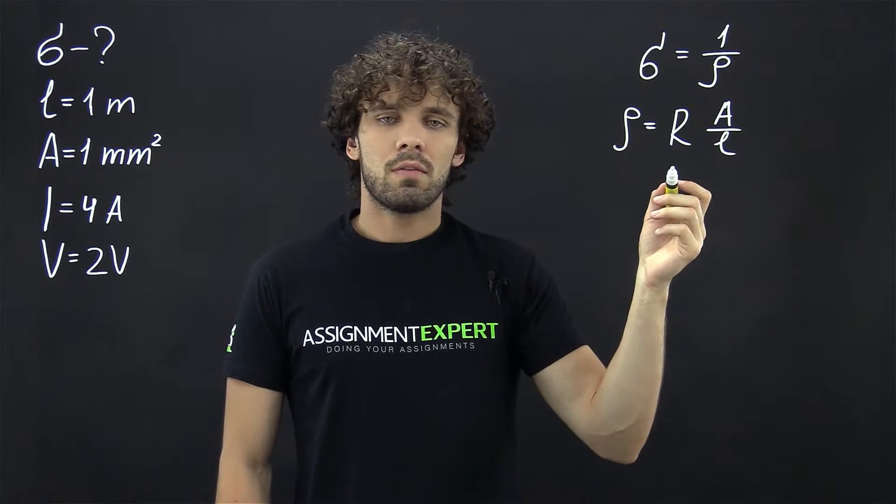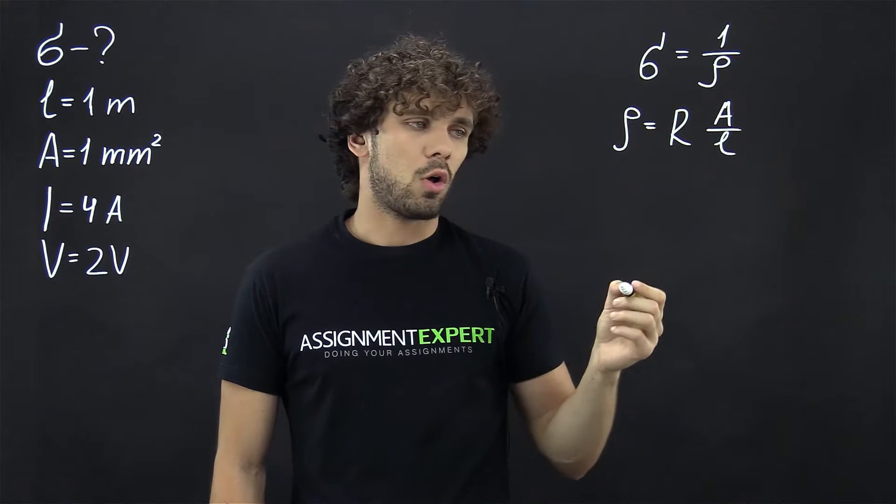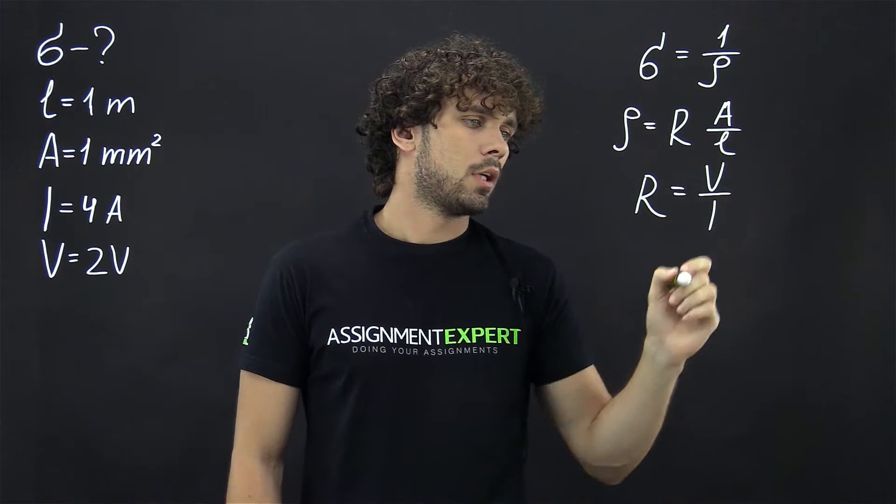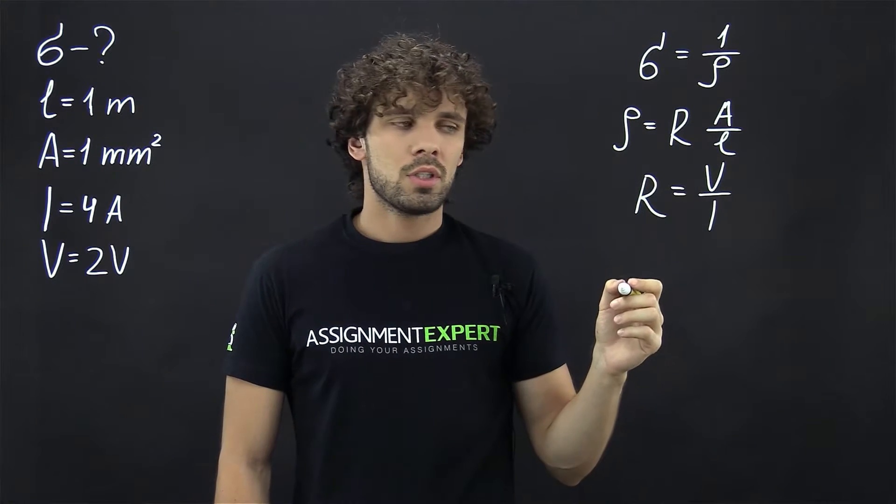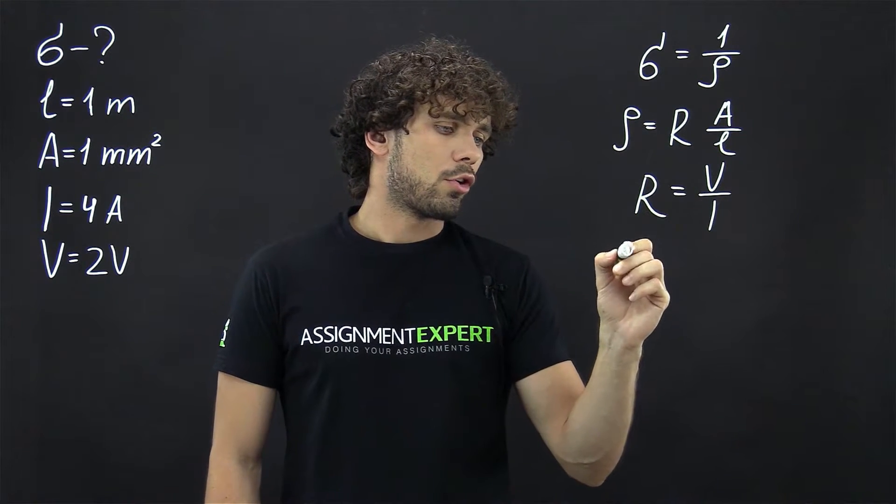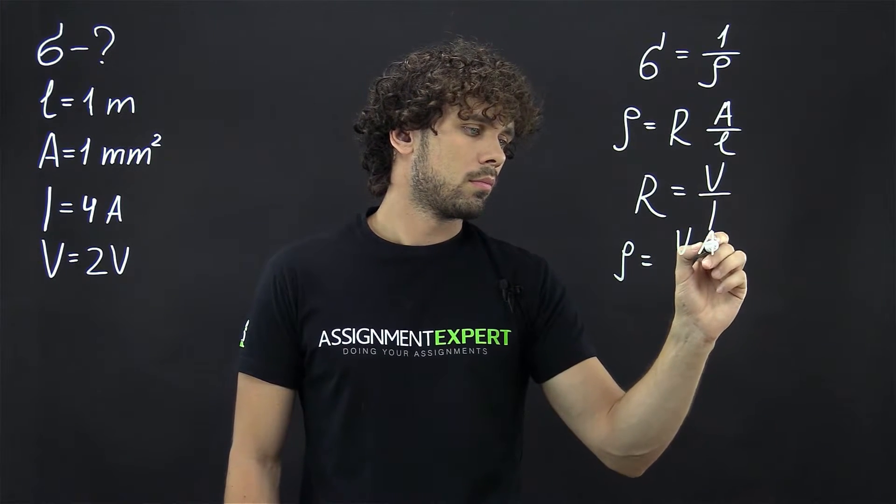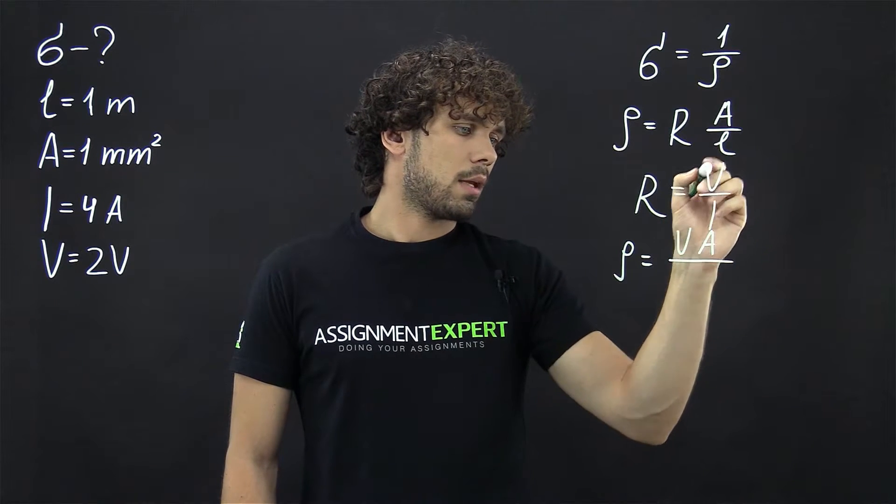Now, the resistance of the wire can be found from Ohm's law: R equals V over I. Combining these two formulas we get the following: rho equals V times A over I times L.